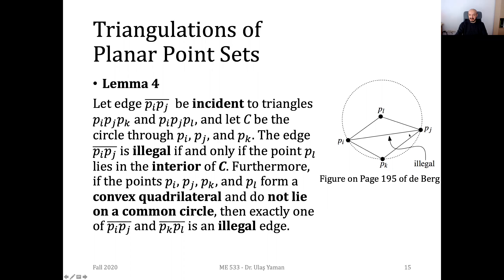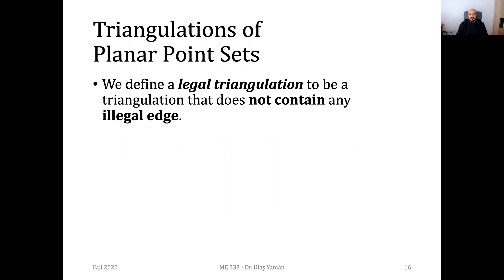Furthermore, if all four points are not on a common circle, we will have exactly one illegal edge. But if they are on the same circle, there is no illegal edge. If just three points are on the same circle and one is inside, the shared edge between the two triangles is an illegal one. We define a legal triangulation as one which has no illegal edges.